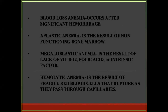Blood loss anemia occurs after a significant hemorrhage. Aplastic anemia is the result of non-functioning bone marrow. Megaloblastic anemia is characterized by an increase in the size of RBCs, resulting from a lack of vitamin B12 and folic acid or an intrinsic factor. Hemolytic anemia is the result of fragile red blood cells that rupture as they pass through the capillaries, releasing hemoglobin into the tissues.